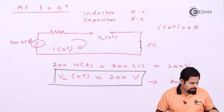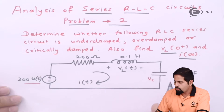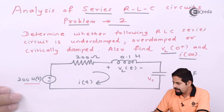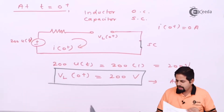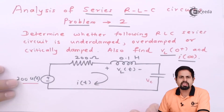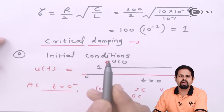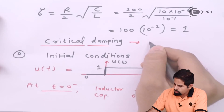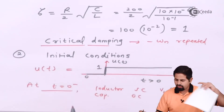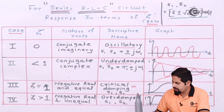Now let us go to answer number 3: find I of infinity. Because this is a series RLC circuit, we get a second-order differential equation whose solution is given by roots S1 and S2. We can directly write the roots. We already found zeta is 1, meaning it is critical damping. In the case of critical damping, the roots are negative real and repeated, as shown in the table — negative real and equal roots when zeta equals 1, and this is the corresponding graph.